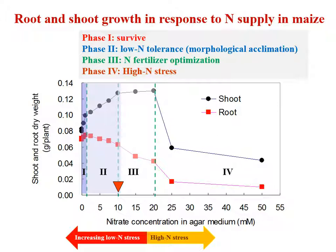First, let's look at how maize plants respond to nitrogen supply. Here is a simple experiment with different nitrogen input levels from very low to very high nitrogen concentration. We can see both shoot growth response and root growth response. In the region where shoot biomass is at maximum, this is the optimal nitrogen region for maize growth.